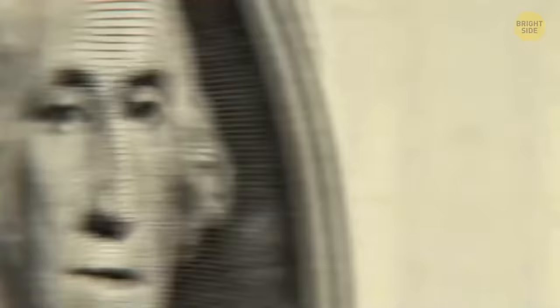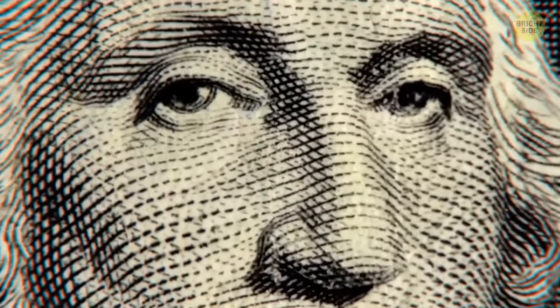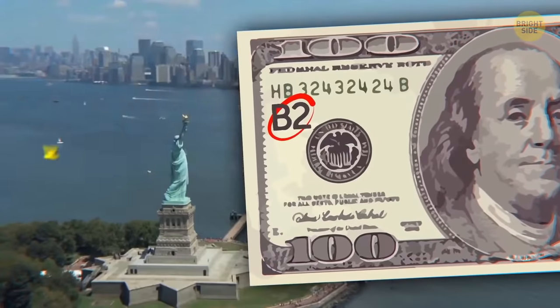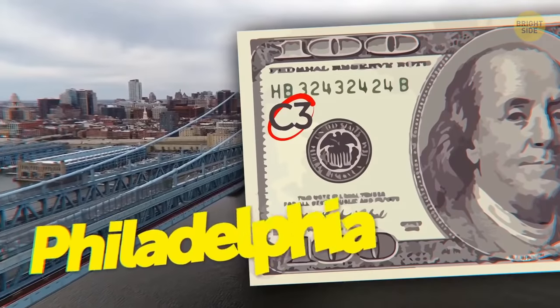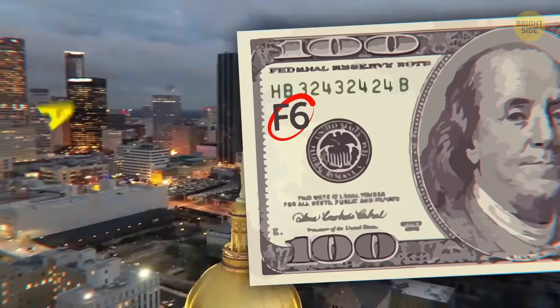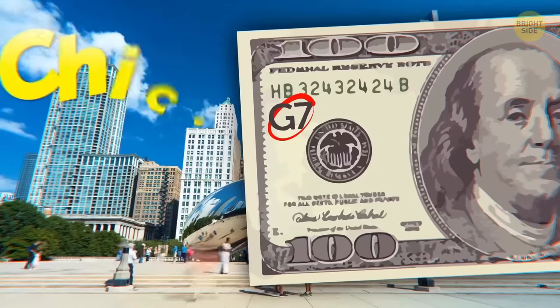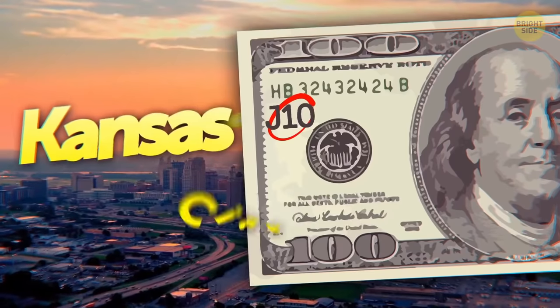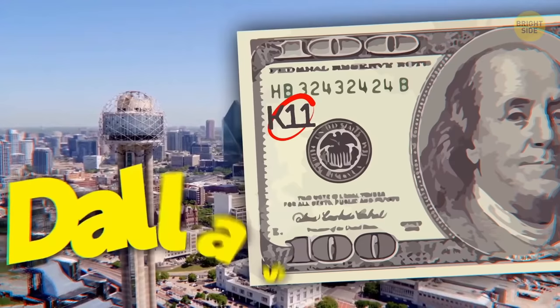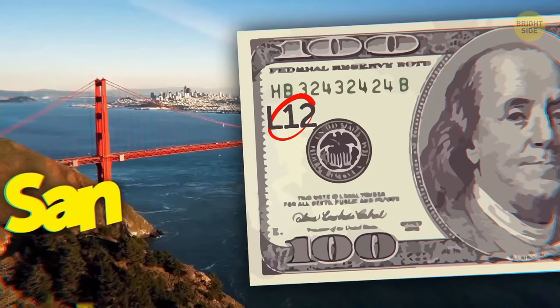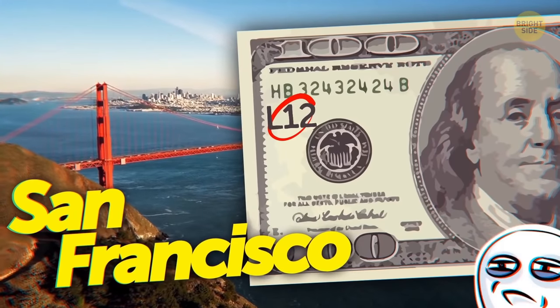In the United States, 12 different Federal Reserve Banks print all the money. So if you want to know where your money comes from, just look for these small codes. A1 Boston, B2 New York, C3 Philadelphia, D4 Cleveland, E5 Richmond, F6 Atlanta, G7 Chicago, H8 St. Louis, I9 Minneapolis, J10 Kansas City, K11 Big D Little A double LAS. It's a song. L12 San Francisco. Never call it Frisco.